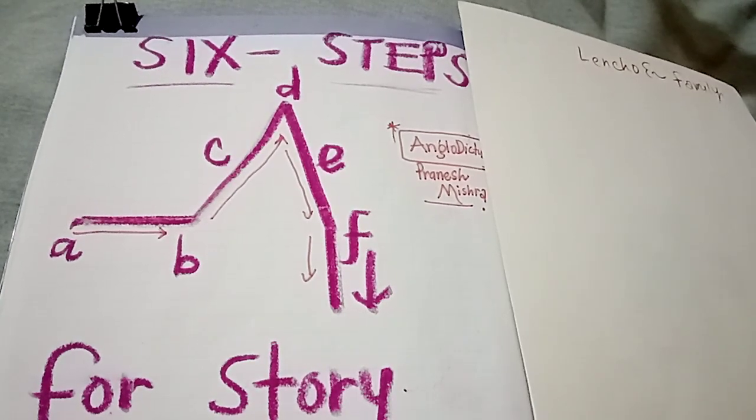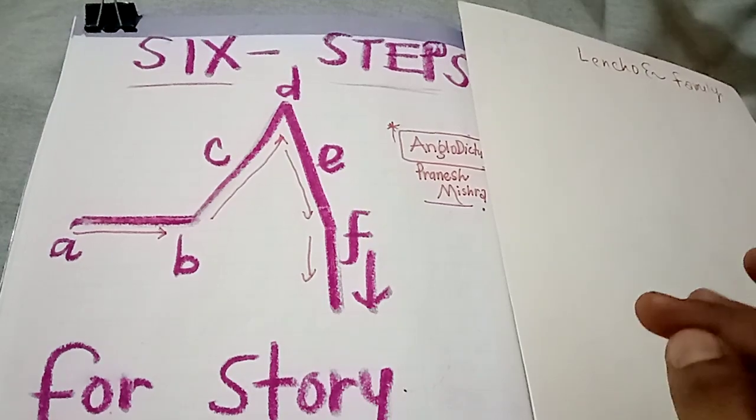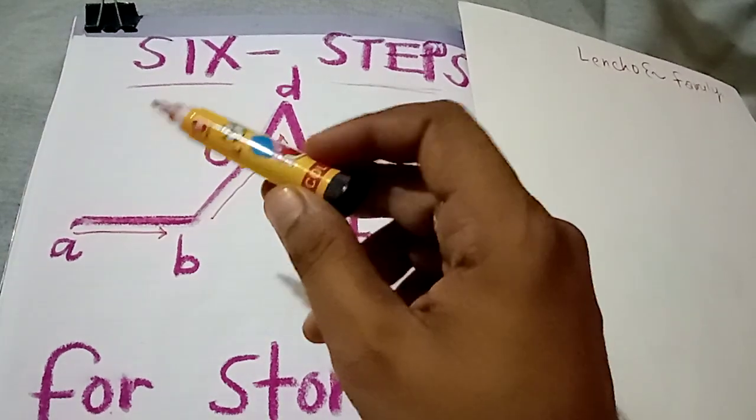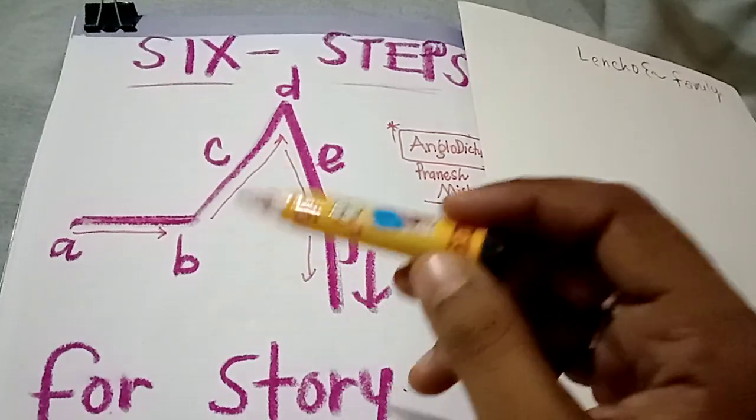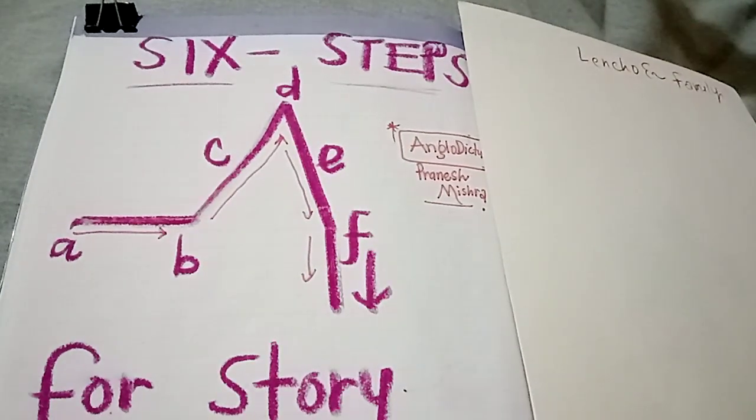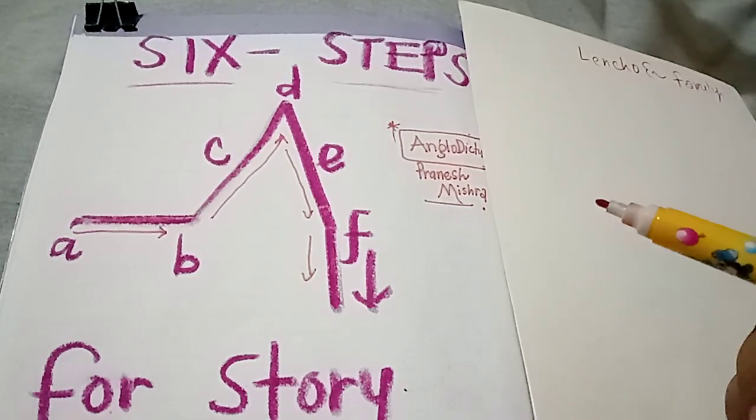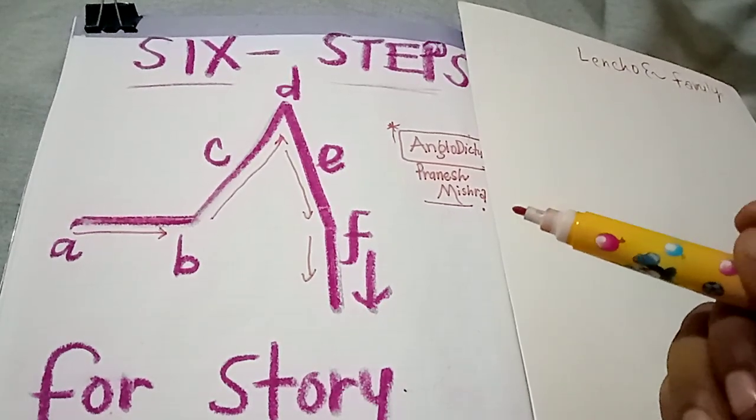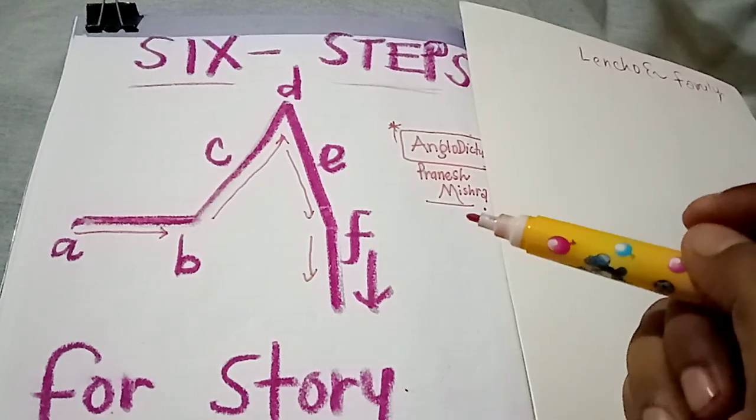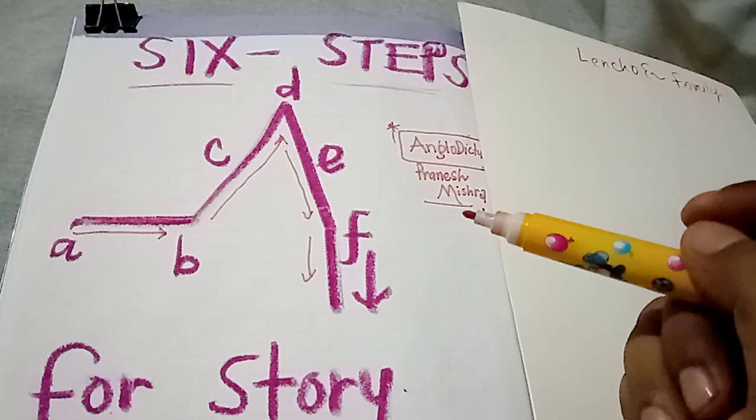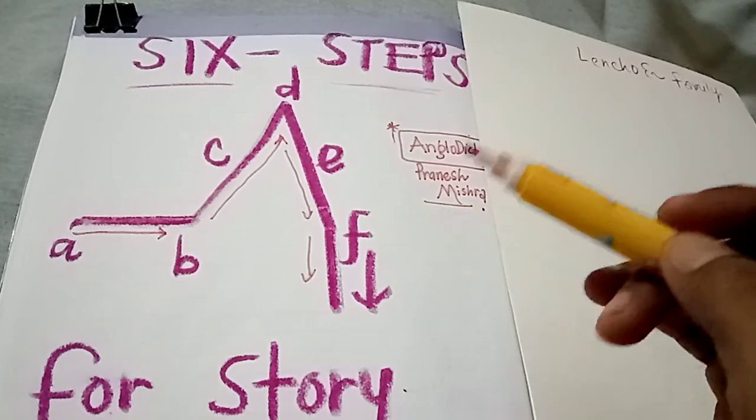You can see that I have written 6 steps here, that is A, B, C, D, E, F, that I always tell to my student. This is the diagram of a plot of the story. As our life moves, like that, a story moves.